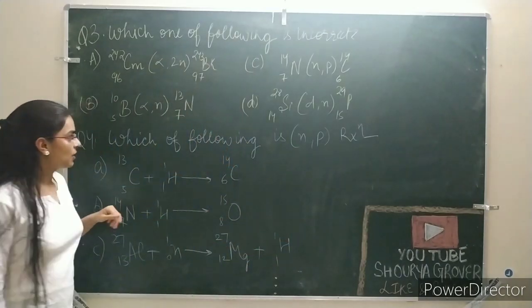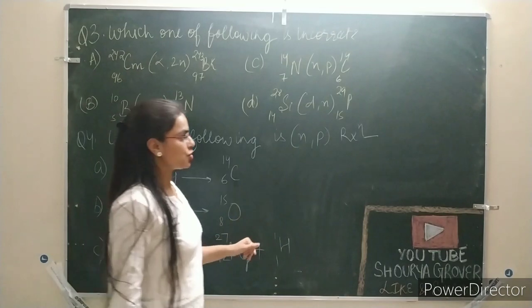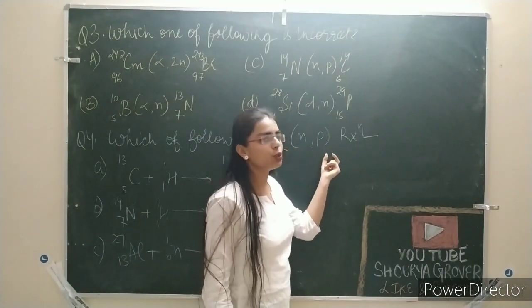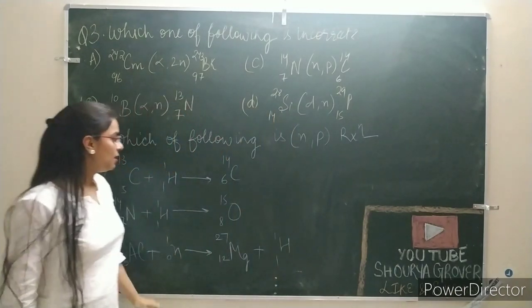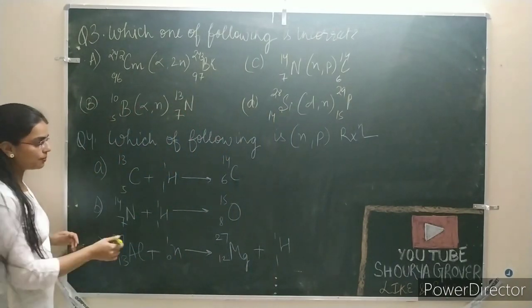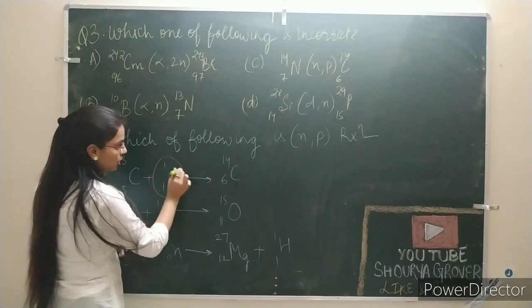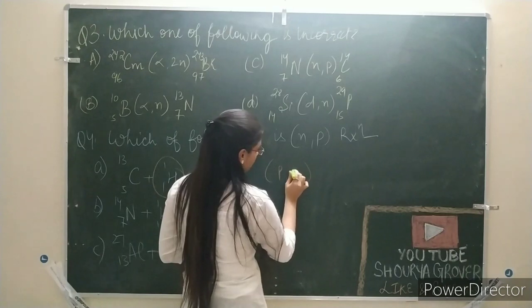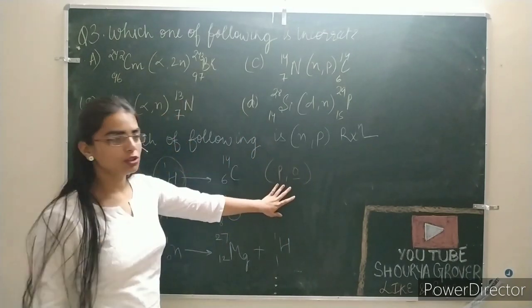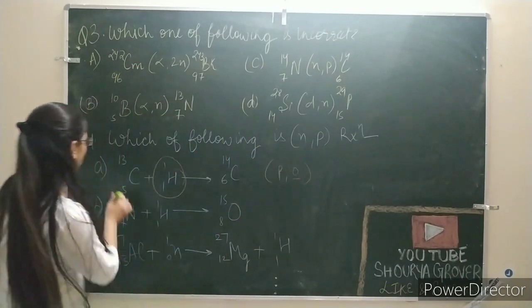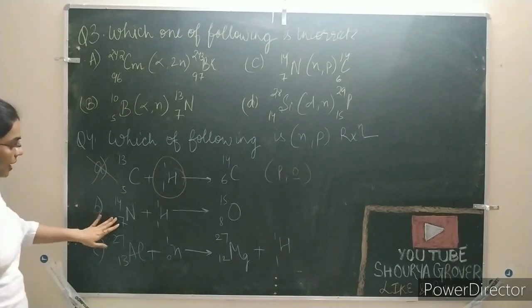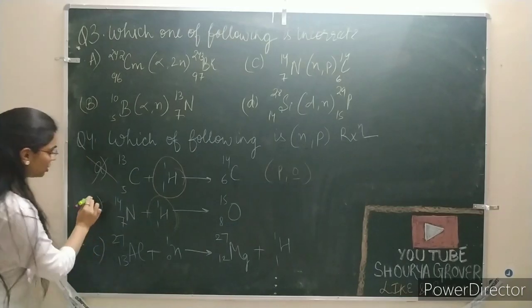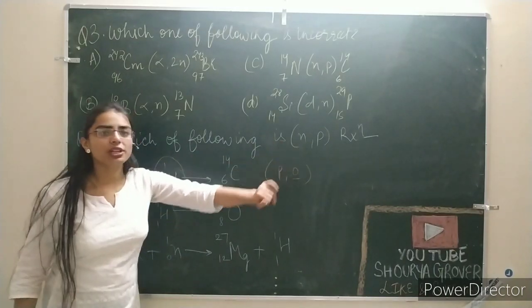Fourth question: which of the following is an NP reaction? This means the bombardment is a neutron and the emit will be a proton. First reaction: the bombardment here is a proton and the emit is nothing — so this is wrong. Second: checking the bombardment again — this is also not matching.